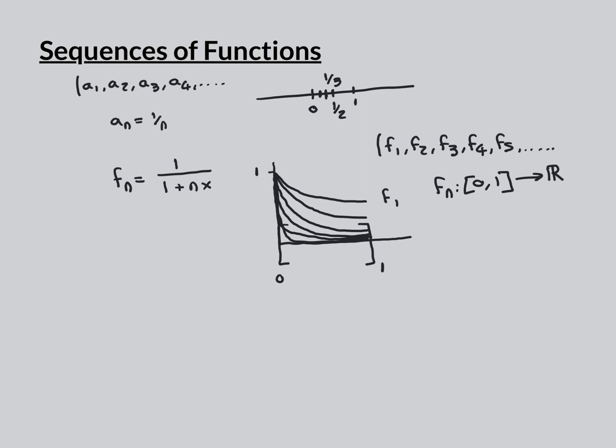You mustn't have one function that's suddenly over a totally different domain, like the interval from 5 to 6. That wouldn't work. They all need to be over the same domain. Intuitively, with the picture, if f4 were over some totally separate domain, that wouldn't make sense in terms of what we're trying to capture.